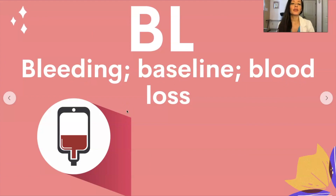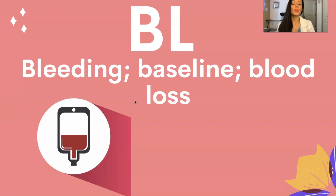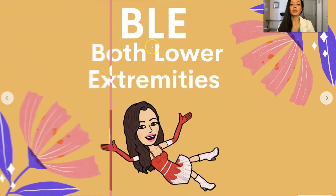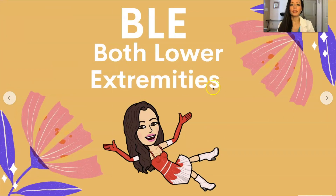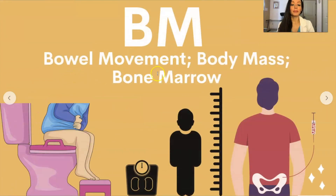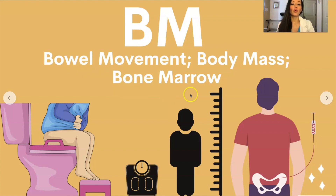I have another video on medical abbreviations A where I talk about how whenever possible, don't abbreviate — this is mostly so that you know what the abbreviations could be, but you don't want your entire paragraph to look like one long abbreviation. BLE is both lower extremities. BM could be bowel movement, body mass, or bone marrow. Usually when talking about body mass index, we abbreviate it as BMI, so BM typically refers to bowel movement or bone marrow.